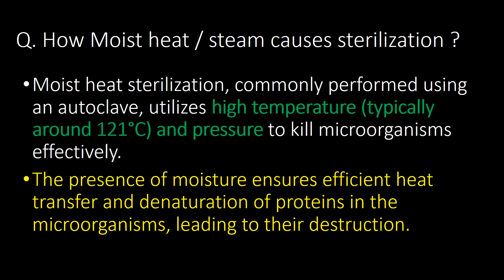Welcome. The first very basic question is how moist heat or steam causes sterilization. Moist heat sterilization, commonly performed using an autoclave, utilizes high temperature — typically around 121 degrees Celsius — and pressure to kill microorganisms effectively. The presence of moisture ensures efficient heat transfer and denaturation of proteins in the microorganisms, leading to their destruction.